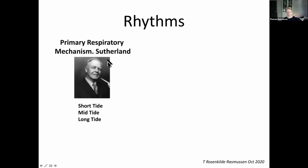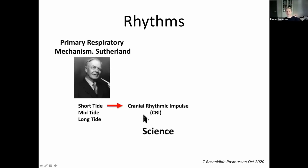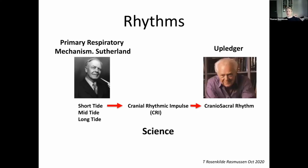Many years after Sutherland described these rhythms, the first attempt came to palpate them and publish the findings in a study. In science, this was given the name the cranial rhythmic impulse. Later came Dr. Upledger, also palpating a rhythm, who called it the craniosacral rhythm.